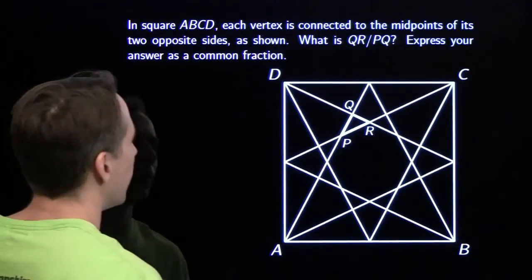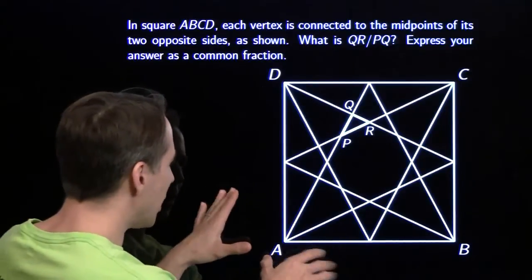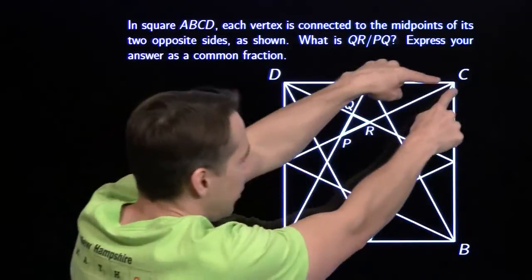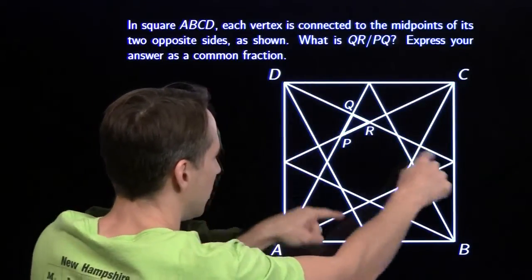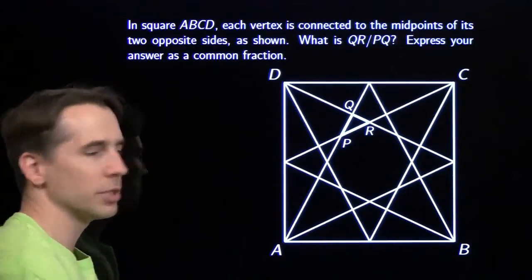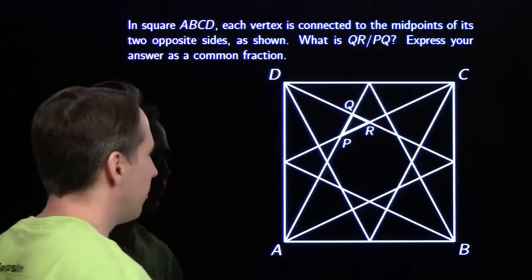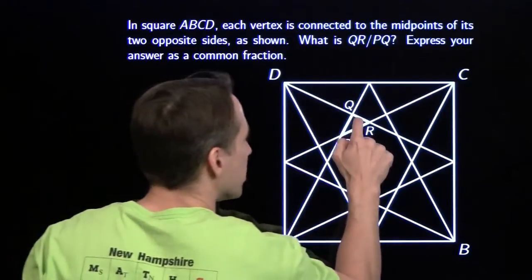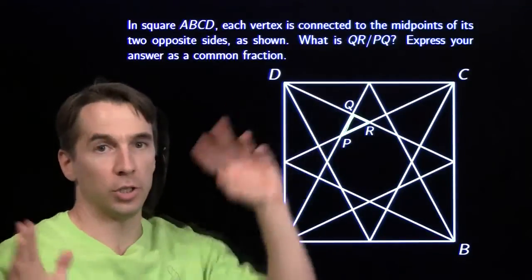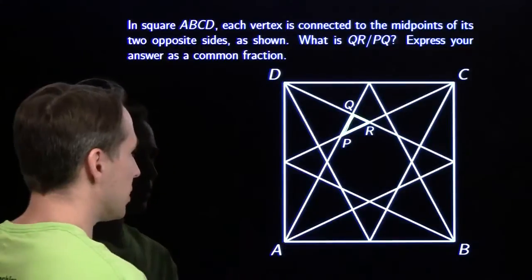On to the next problem. We have a square ABCD. We take each vertex and connect it to the midpoints of the opposite sides. We're looking for the ratio QR to PQ. A ratio immediately makes me think similar triangles, so we're going to try to find some similar triangles. I'm going to look for some parallel lines, because parallel lines mean similar triangles.